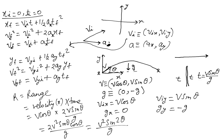Let's recap: any problem in kinematics can be broken down into a set of equations for the x-axis and a set for the y-axis. They share common variables like time, but everything else is independent. For example, time is the same in both motions but acceleration is different — there is no acceleration in the x-motion and there is acceleration in the y-motion. The initial velocities are also different: v·cosθ in x and v·sinθ in y. In the next lecture, we will take one more example to make things even clearer.